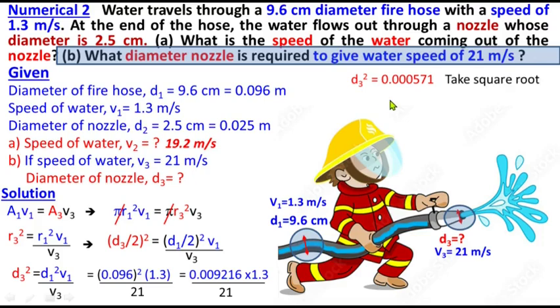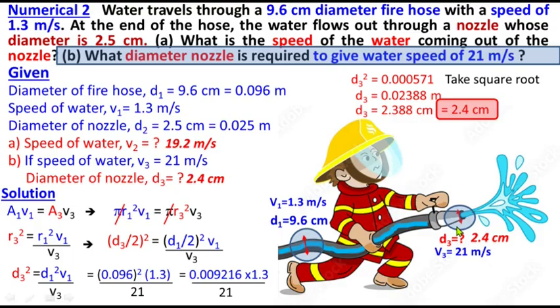Taking the square root gives D₃ equals 0.02388 meters. Converting to centimeters: 0.02388 times 100 equals approximately 2.4 centimeters. So the required nozzle diameter is about 2.4 centimeters.